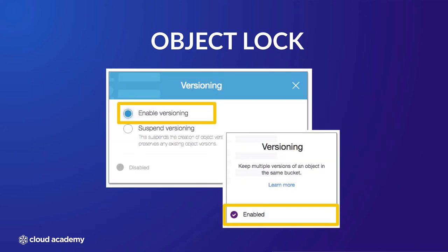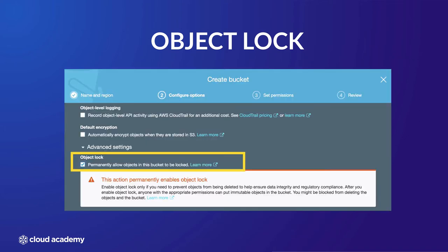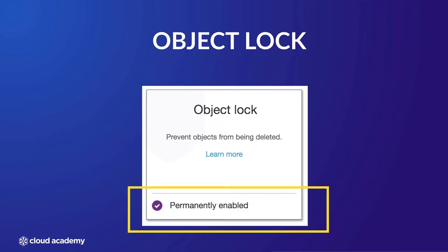To enable and configure object lock during the creation of a bucket, you first need to ensure that you have versioning enabled. Without first enabling versioning, it is not possible to enable object lock, which can be found under the advanced settings of step 2, configure options, during creating your bucket. Once you have created your bucket with object lock enabled, it will permanently be enabled and can't be disabled.